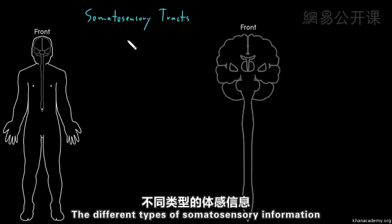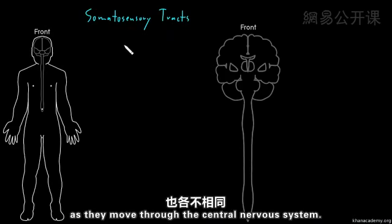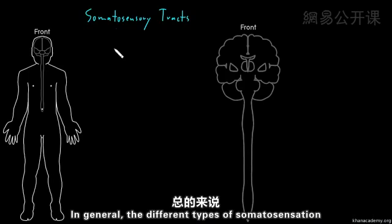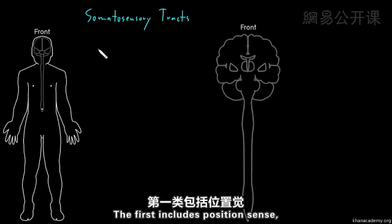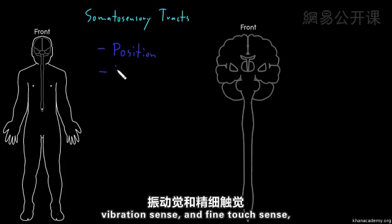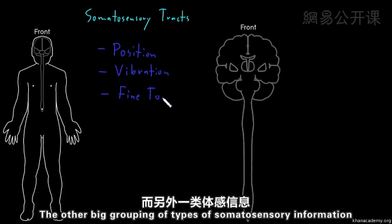The different types of somatosensory information tend to travel in different pathways as they move through the central nervous system. In general, the different types of somatosensation break down into two big categories. The first includes position sense, vibration sense, and fine touch sense — very precise touch sense information.